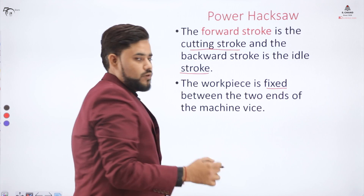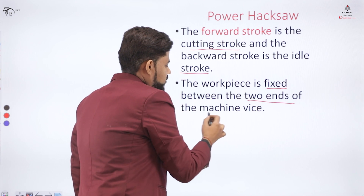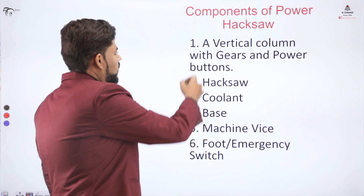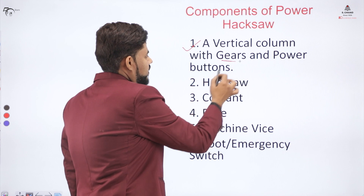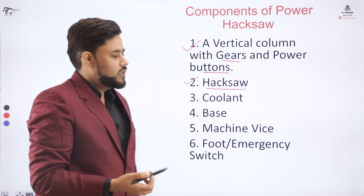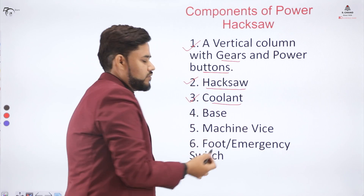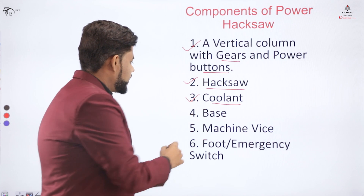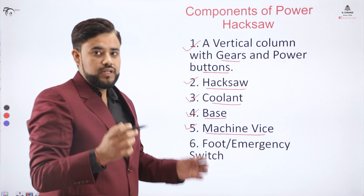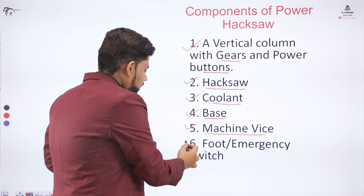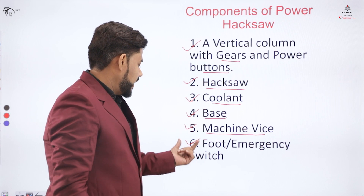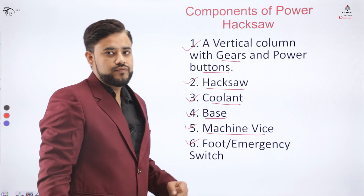The work piece which we want to cut is placed in between the two ends of the machine vise. The components of the power hex saw are: a vertical column with gears and the power button, the hex saw blade used to cut the material, the coolant supplied for the cutting operation, the base of the machine, the machine vise on which we keep the object to be cut, and an emergency foot-operated switch.